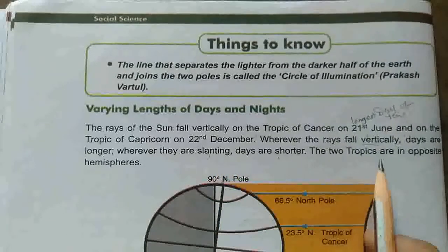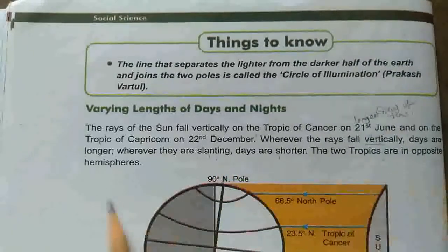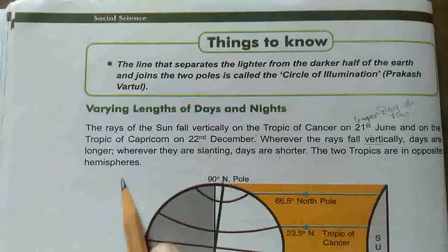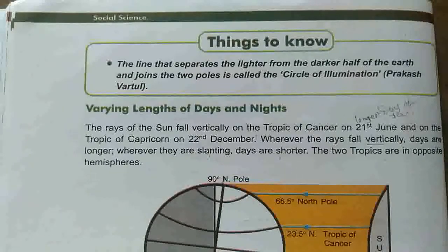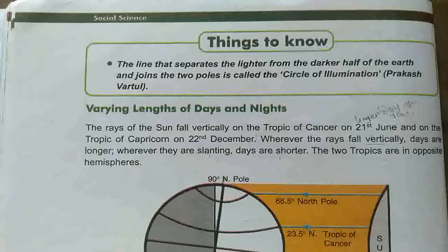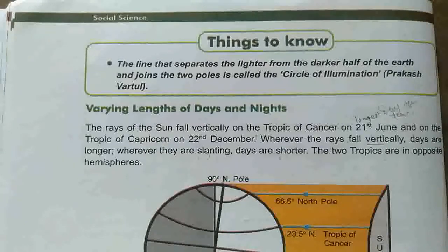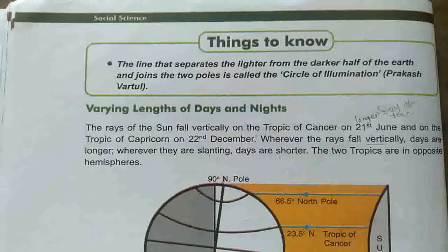The two tropics are in opposite hemispheres. These two tropics — the Tropic of Cancer and the Tropic of Capricorn — both fall into opposite hemispheres.